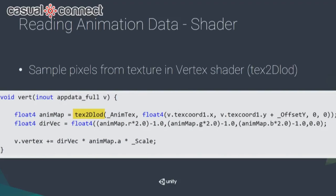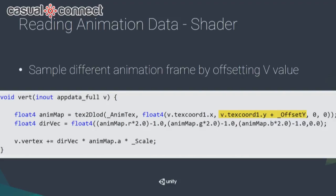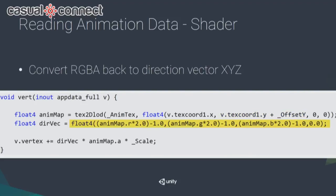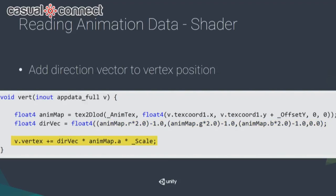In the shader, you use tex2Dlod to read back the texture. In the V value of your UV, you do a simple offset to scroll the V value for the current animation frame. Once you get the value from the texture, you reconvert it back to the original direction vector, then add that back to the base vertex position. The result is the new vertex position at, say, frame 5.